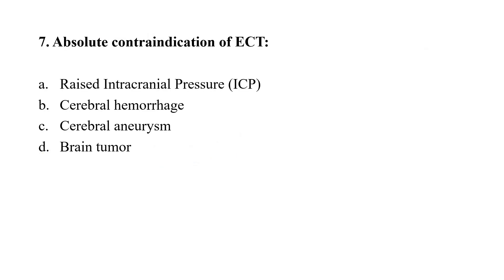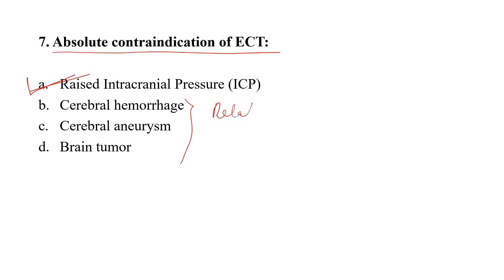Question number seven: What is the absolute contraindication of ECT? Option A: Raised intracranial pressure. Option B: Cerebral hemorrhage. Option C: Cerebral aneurysm. Option D: Brain tumor. The correct option is option A — raised intracranial pressure is the absolute contraindication of ECT, whereas the other three are relative contraindications.